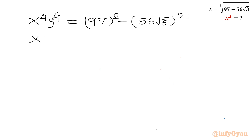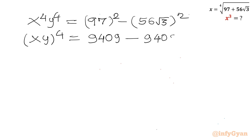This can be written as (xy) to the power 4. Now 97 squared is 9409, and (56 root 3) squared is 9408. So the right-hand side is 1, meaning (xy) to the power 4 equals 1. Therefore xy equals plus 1 or minus 1.